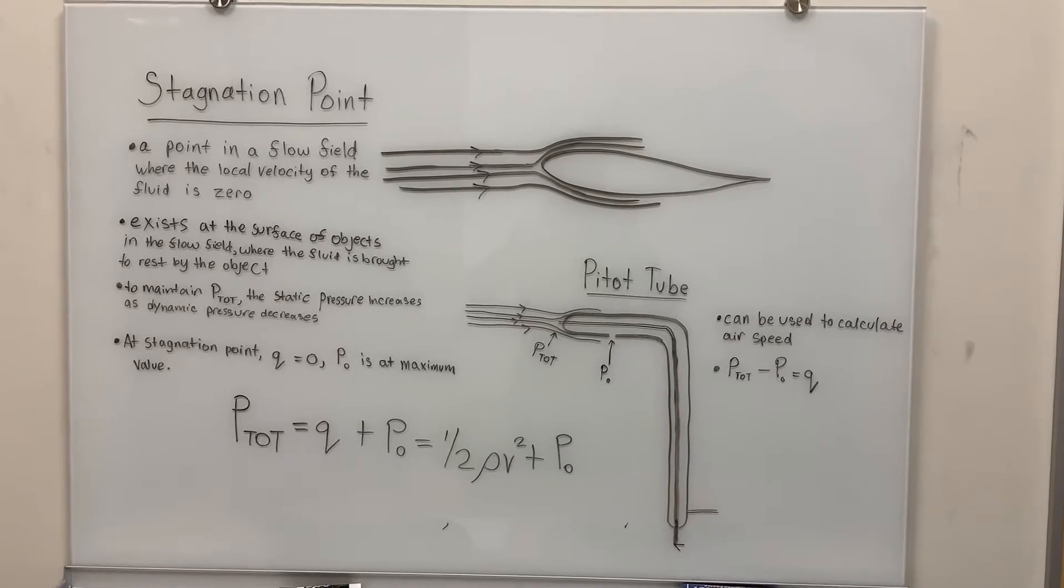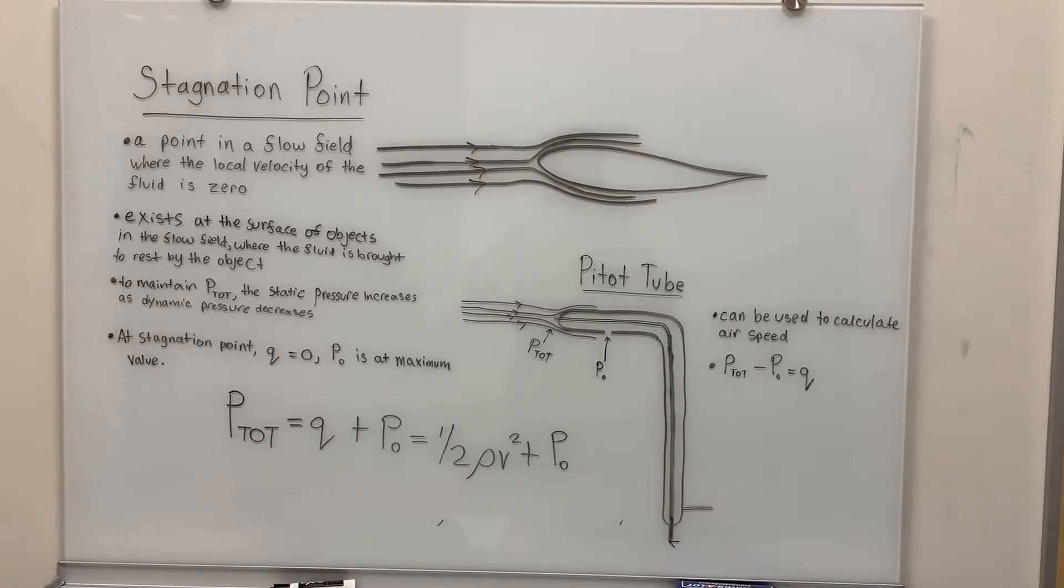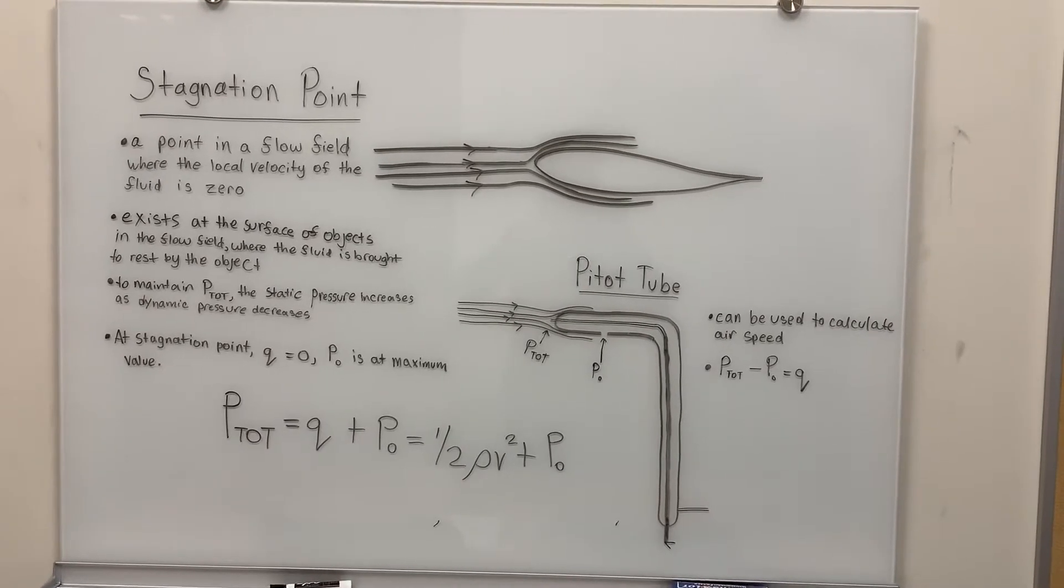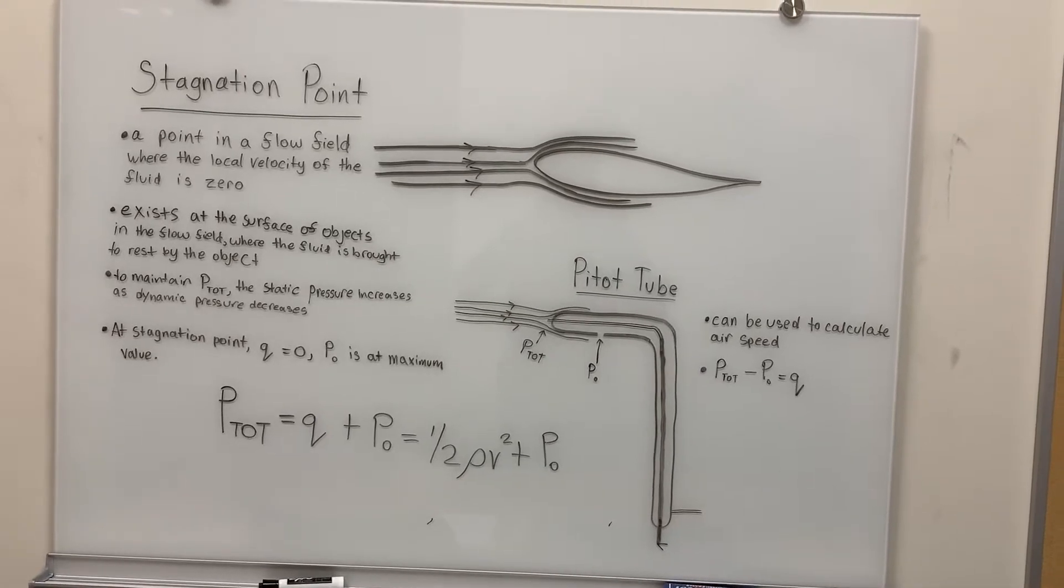For example, in the top right corner we have a diagram of an airplane wing. In the diagram, the fluid flows from left to right.